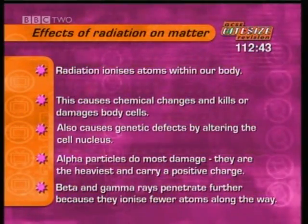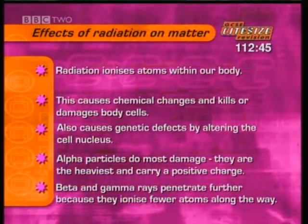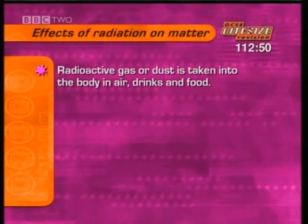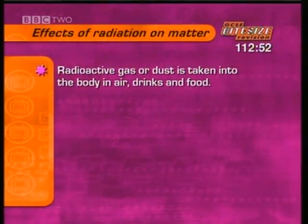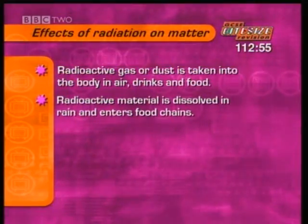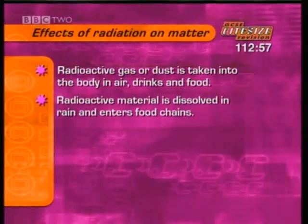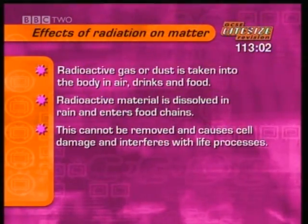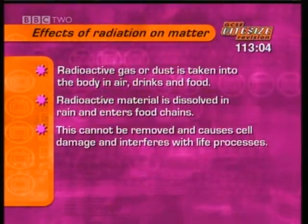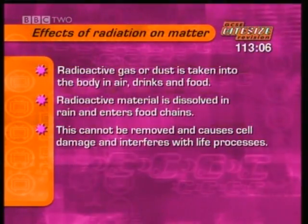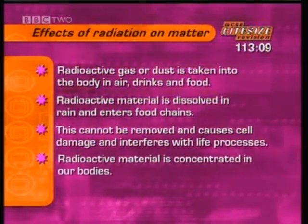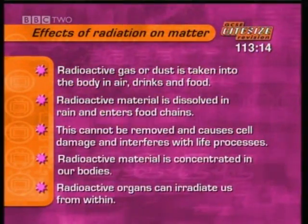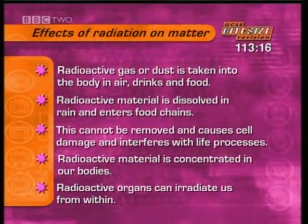But how does radiation get to us? Radioactive gas or dust can be taken into the body in the air, drinks and food. Radioactive material can also be dissolved in the rain and enter the food chain through grass. Once in the body, it cannot be removed — it causes cell damage and interferes with life processes. Some radioactive material can become concentrated in our bodies, such as in the thyroid gland, and radioactive organs can then irradiate us from within.